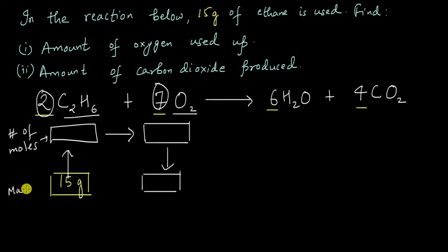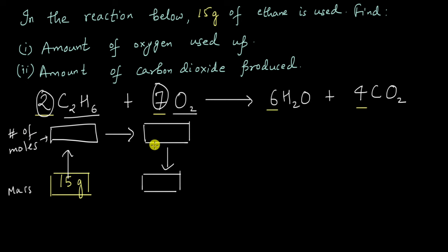We want to go from mass of ethane to number of moles of ethane, then using the stoichiometric coefficients, go to the number of moles of oxygen, and then find the mass of oxygen. Why don't you try it on your own — pause this video and give it a shot.